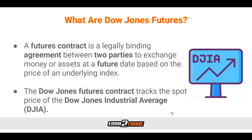First things first, let's talk about what the Dow Jones is as well as what Dow Jones Futures are. When I say Dow Jones, that is short for Dow Jones Industrial Average, and it can be shortened even further with DJIA — that's commonly how you're going to see it on your TV screen. The Dow Jones Industrial Average is an index that tracks 30 large publicly owned blue chip companies that are traded on the New York Stock Exchange as well as the NASDAQ. The Dow Jones was named after Charles Dow, who created the index back in 1896 with his business partner Edward Jones. Traders often refer to it simply as the Dow, and it's one of the oldest and most watched indices in the world.